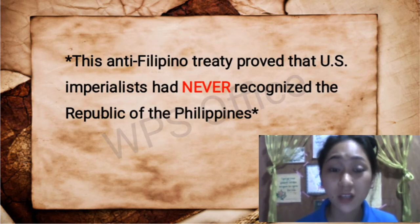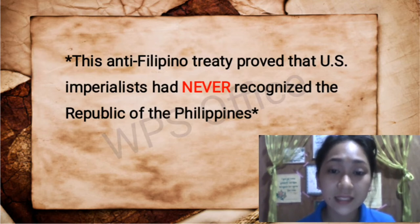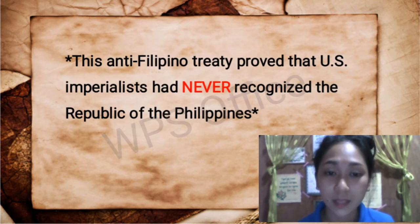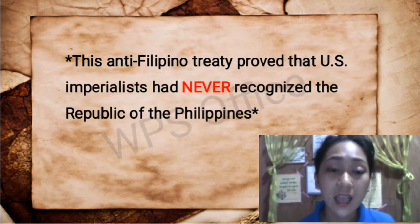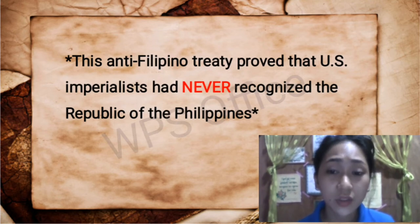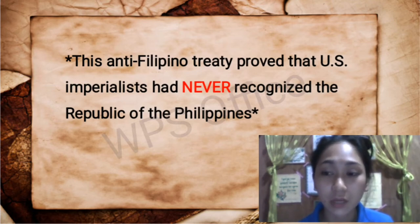Why was it considered anti-Filipino? Because on the same year, Filipinos led by Aguinaldo had already waved the flag in Kawit, Cavite, signaling independence and asking the Spaniards to recognize their proclamation. With the Americans fully aware of the independence declared on June 12, 1898, they still pursued the Treaty of Paris on December 10. In short, there was a conflicting acceptance between the Filipinos and the Americans.